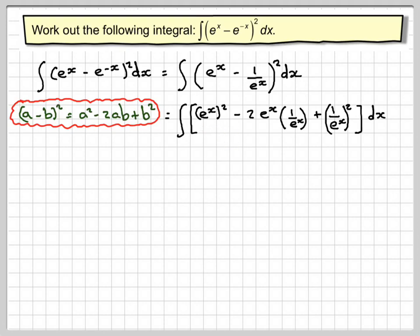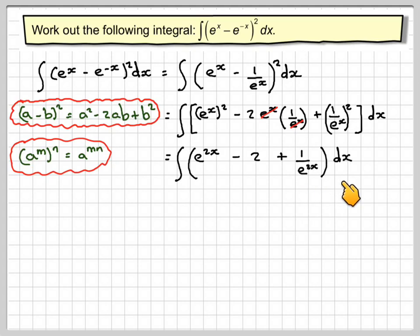Before we integrate let's just tidy it up a little bit. So the integral of a to the m to the n is a to the mn, so it becomes e to the 2x. Those will cancel out minus 2 and we just get 1 over e to the 2x dx. So we can rewrite the last bit the same but just write it as e to the minus 2x dx.